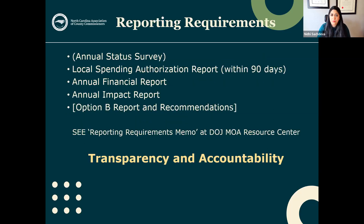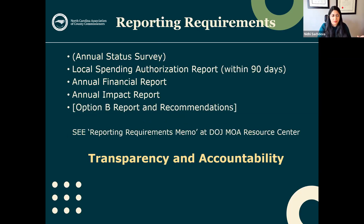The reporting requirements, as detailed in the MOA, require local governments to report what they intend to spend within 90 days of budgeting a strategy. They're also required to do annual financial reports, annual impact reports, and only if they go the Option B route are they required to do the collaborative strategic planning report and share recommendations from that process. If you just Google 'DOJ MOA Resource Center,' you can find a helpful memo called the 'Reporting Requirements Memo' that has more details.